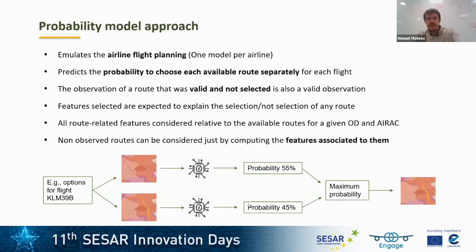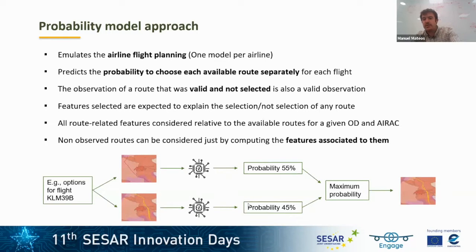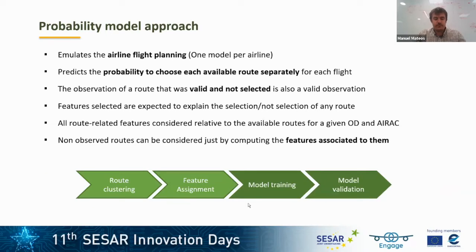For example, for a particular flight with two route options available, we run the model, get a different probability for each route, and select the route with the maximum probability. The process to implement this model is: first, perform route clustering; then assign features to each route; then train the machine learning model; and finally validate the model.